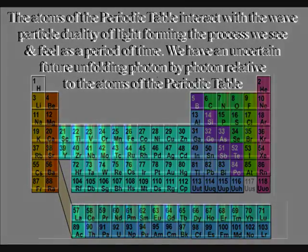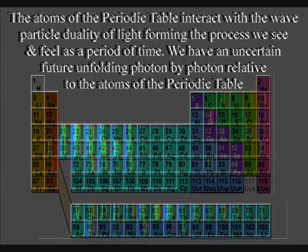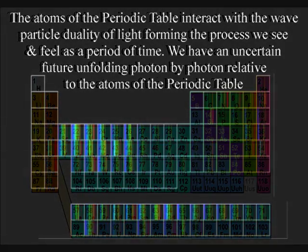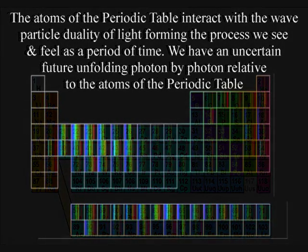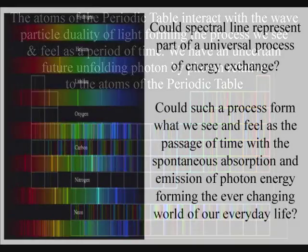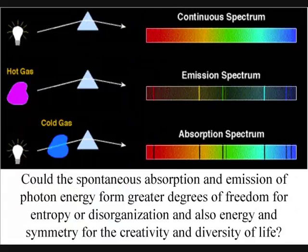Spectral lines may be observed either as an emission line or as an absorption line, and are formed by a single photon exchanging energy. When we have an absorption of photon energy, it is spontaneously re-emitted either in the same frequency as the original or in a cascade.